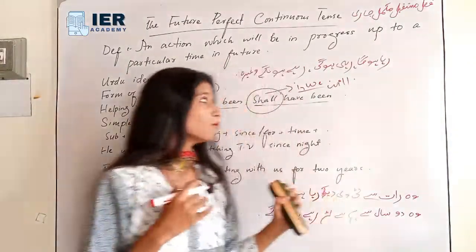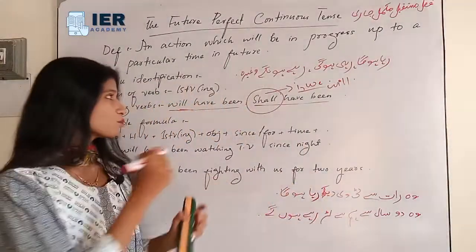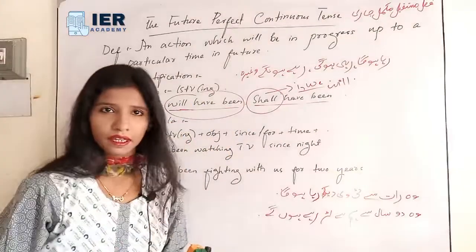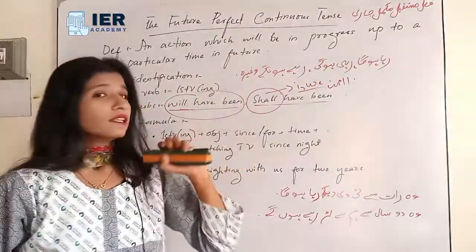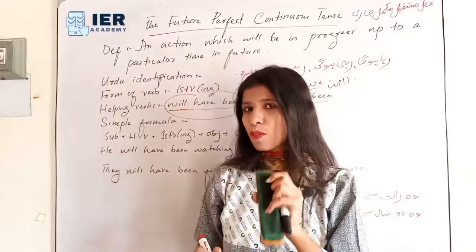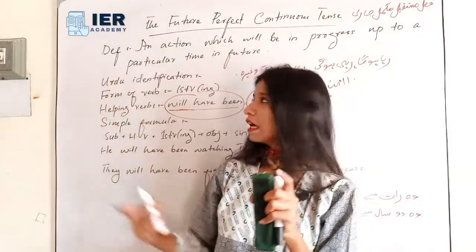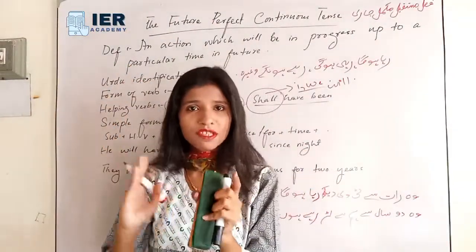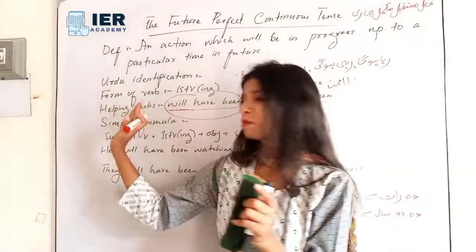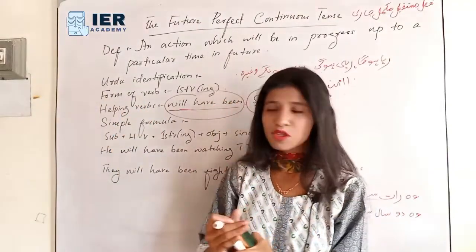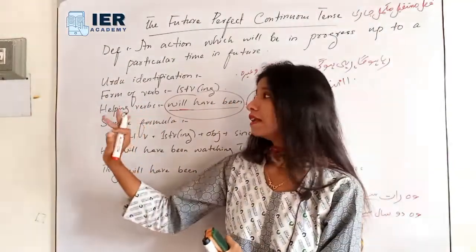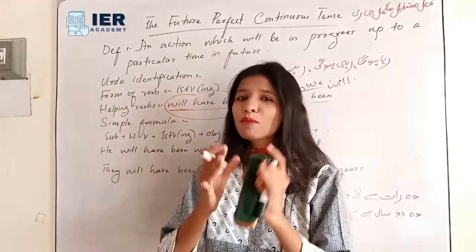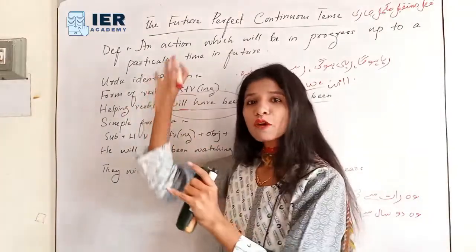For all other subjects — he, she, it, you, they, or any singular or plural name — we use 'will have been'. Now we come to sentences. We have seen the Urdu identification, understood the definition, seen which verb form to use, and understood the helping verbs.